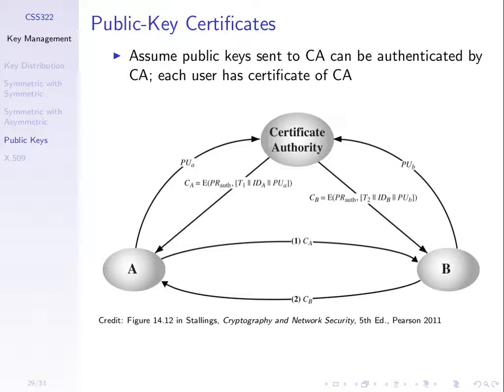Note that these steps happen in advance. Whenever A wants to communicate with someone, all it does is send its certificate. Once A has CA, its own certificate, if it wants to communicate with B it sends CA to B — it doesn't have to contact the authority. If it wants to communicate with C, some other entity, it just sends its certificate to C. It doesn't matter the destination; we don't have to contact the authority except in the very first instance when being issued a certificate. That really cuts down on communications.